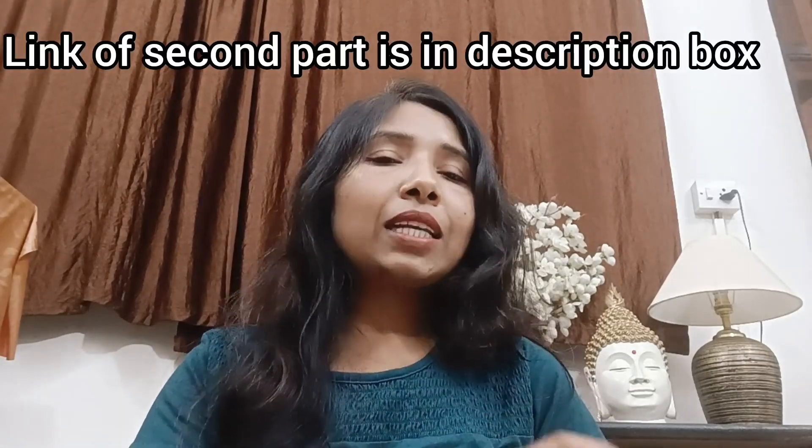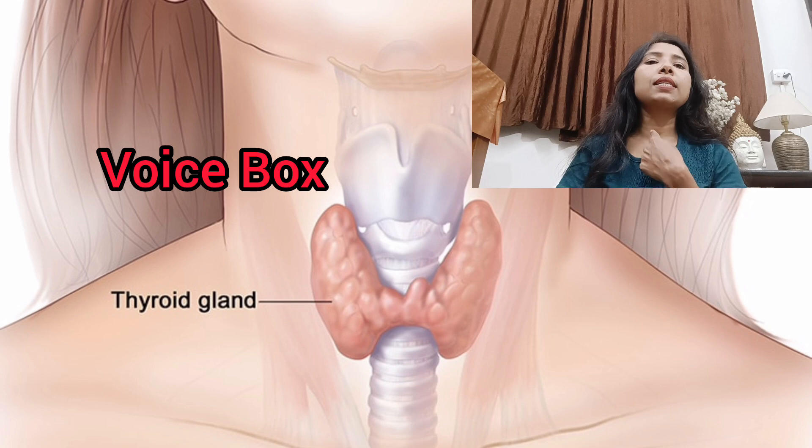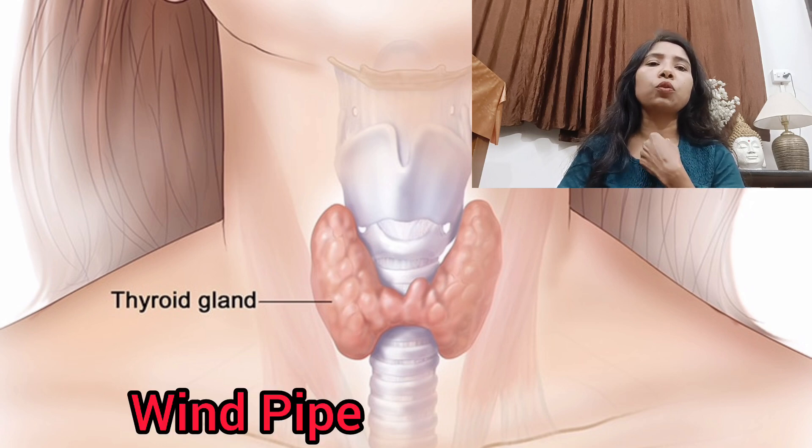Today's topic is thyroid. We are going to talk about the thyroid gland — how does it function, what symptoms can appear when there are thyroid problems, and then we will discuss a diet plan: what you should eat and what you should not eat. We will also discuss Ayurvedic medicines, yoga poses, pranayama, and meditation in the second part. The thyroid is a gland located just below the voice box, near the trachea (windpipe), and it is butterfly-shaped.